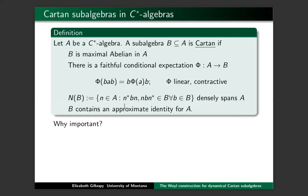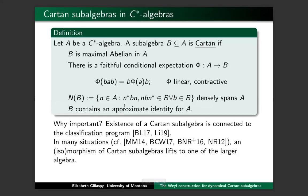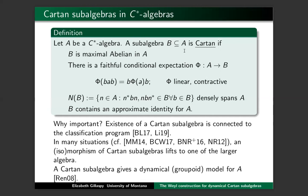Why are Cartan subalgebras important? They're linked to the classification program by some work of Seljuk Barlak and Xin Li. Also, because of the tight link between the Cartan subalgebra and the big algebra, if you've got a homomorphism or sometimes an isomorphism at the level of the Cartan subalgebras, then you can lift that to a homomorphism or sometimes an isomorphism of the big C*-algebra. So B is abelian and friendly, but it contains a lot of the structural information about the larger C*-algebra.